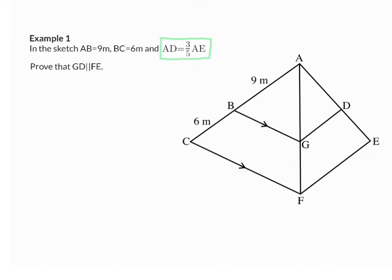we will realize that normally the ratio is in fraction form, but now AE is on the right. So I'm going to divide by AE on the left, and then I have a fraction on the left and a fraction on the right, which gives me a ratio. So I'm going to add on the picture that AD/AE is in the ratio 3 to 5, and to remind myself that it's not actual values, I'm going to add X's. We are asked to prove that GD is parallel to FE.